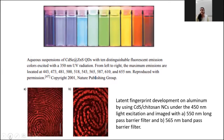The second picture shows latent fingerprint development on aluminum using cadmium sulfide and chitosan nanocomposites under 450 nanometer light excitation. Images are captured at 550 and 565 nanometer band filters. We can make use of different filters and different absorption filters to see where the maximum illumination and maximum contrast are visible.